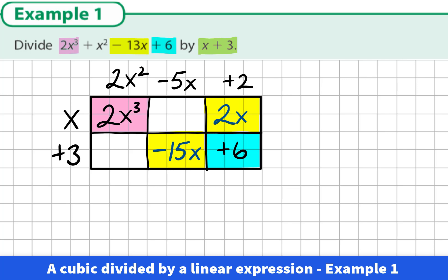This is the missing factor, the quadratic factor we were expecting. So we can write down that our answer, when we divide the cubic by the given linear, we get the answer 2x squared minus 5x plus 2.